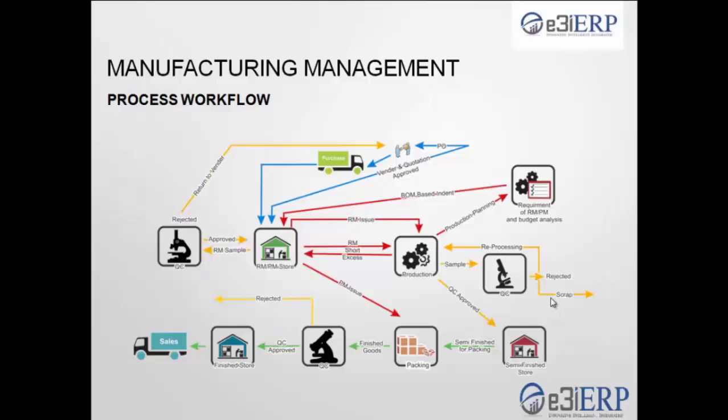Our manufacturing management software is a complete, detailed solution covering each step of manufacturing. It starts from the initial quotation process, then PO generation, followed by raw material purchase, then QC. After QC comes production planning. You can track wastage, reprocessing, and QC approvals and disapprovals. All QC reports are generated as per government requirements. You can manage semi-finished goods and packing materials, and by the time you reach finished goods, the final QC approval is ready for sales.